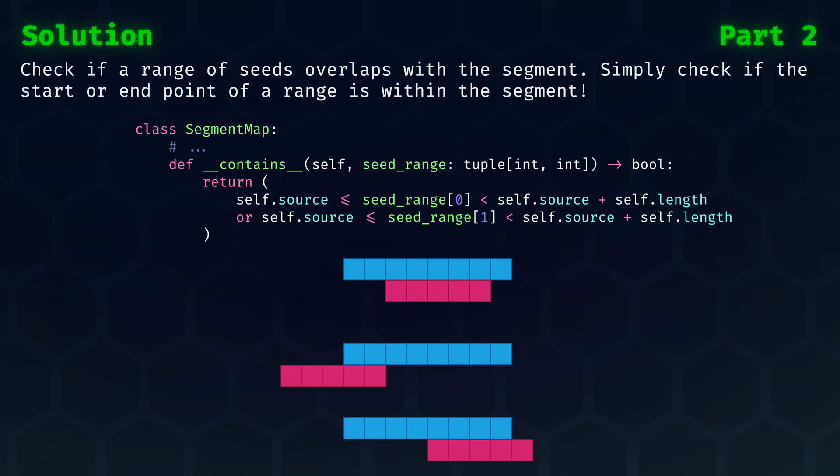Before we dive into the mapping process, let's see how we can modify our segment map to support our new approach. Firstly, we need to check if a range of seeds overlaps with our segment. It is no longer a single seed that is in or out of the segment. For this, we can update our Contains function to check if the start or end point of a range is within the segment.